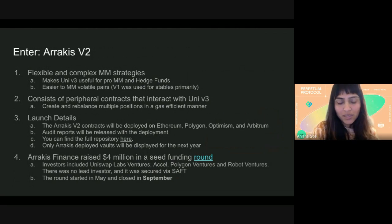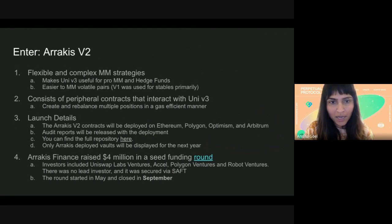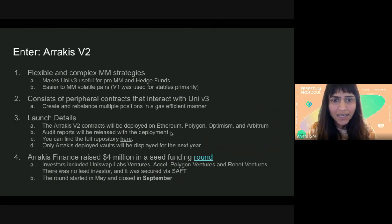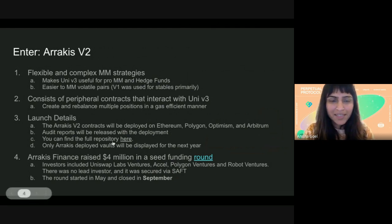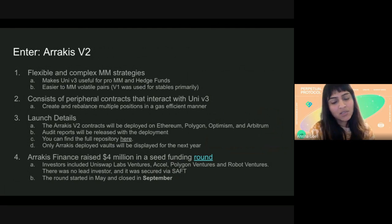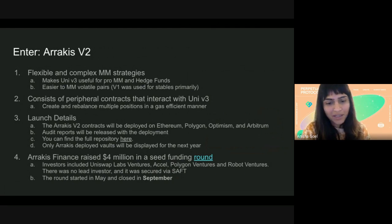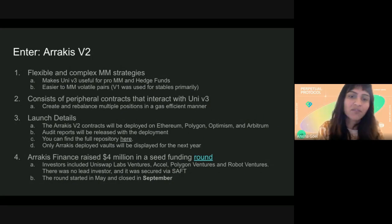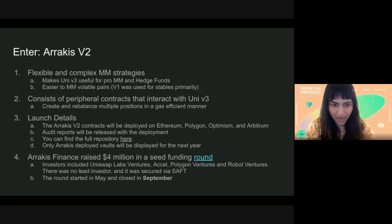V2 is mostly targeted towards market making volatile pairs versus stable pairs — they allow market making for both stables as well as volatile pools. They deployed in December on Ethereum, Polygon, Optimism, and Arbitrum. For now it's going to be fully open source and permissionless, so anyone can create vaults using Arrakus V2, but they will only display on their UI the vaults created by the Arrakus team itself.